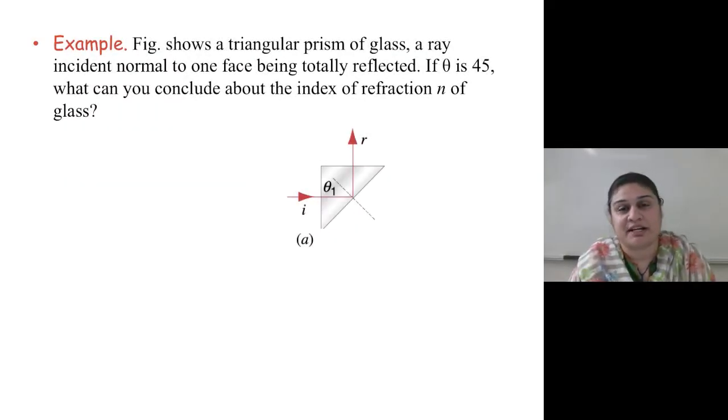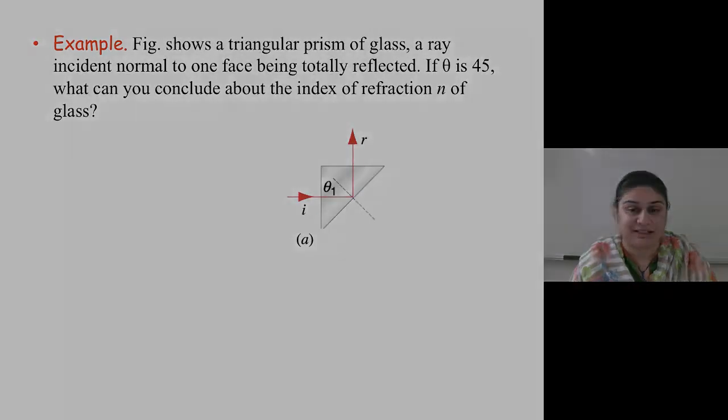The figure below shows a triangular prism of glass, a ray incident normal to one surface, being totally reflected. If theta is 35 degrees, what can you conclude about the index of refraction of the glass?